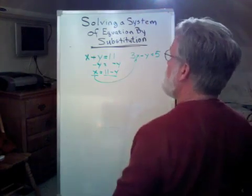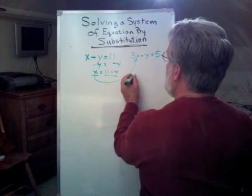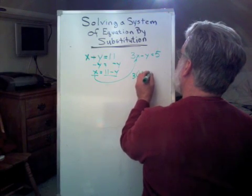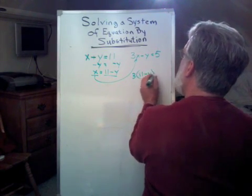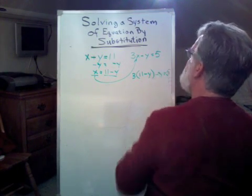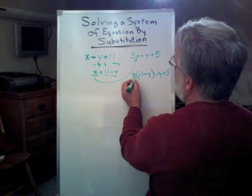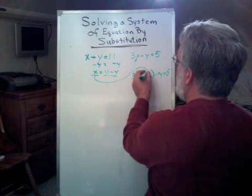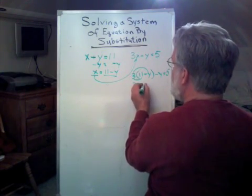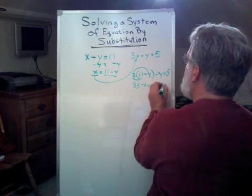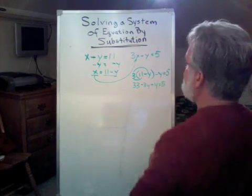Since x equals 11 minus y, now I have 3 times (11 minus y) minus y equals 5. Well, 3 times 11 is 33, and 3 times minus y is minus 3y. So we have 33 minus 3y minus y equals 5.